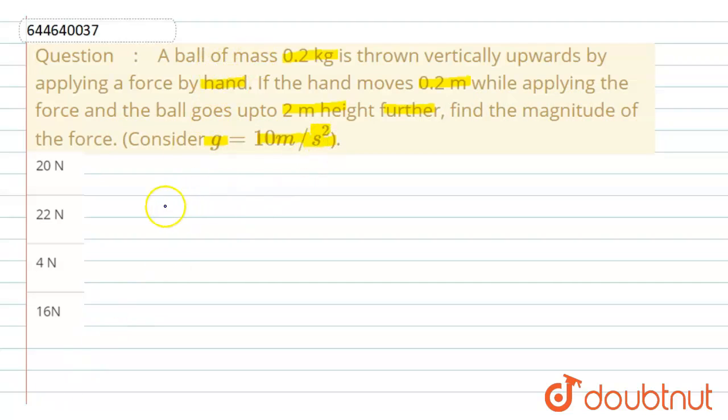So here according to the question, the value of mass of the ball m is 0.2 kg and hand moves 0.2 meter high. So total height h will be h1 plus h2, where h1 is the height up to which the hand moves and then after the ball moves up to 2 meter height, it means h2 is 2 meter.